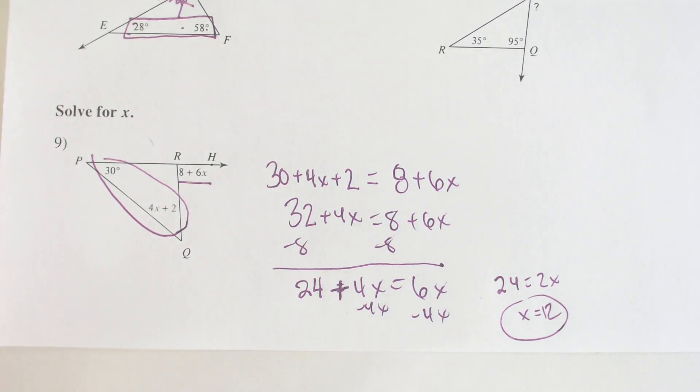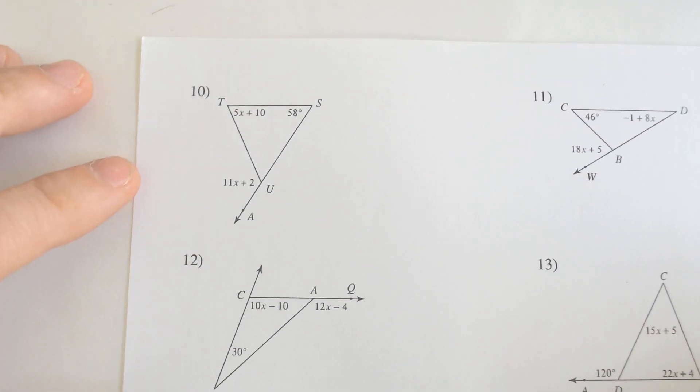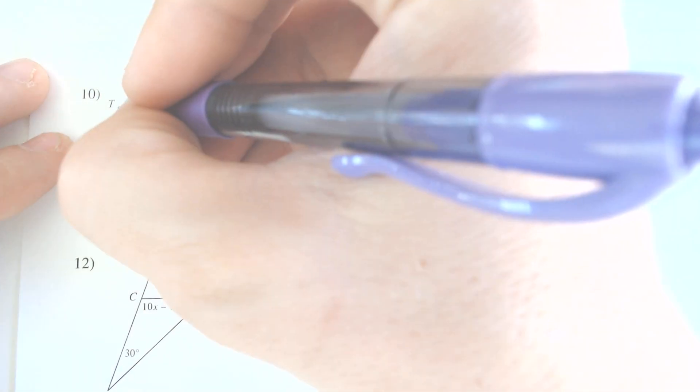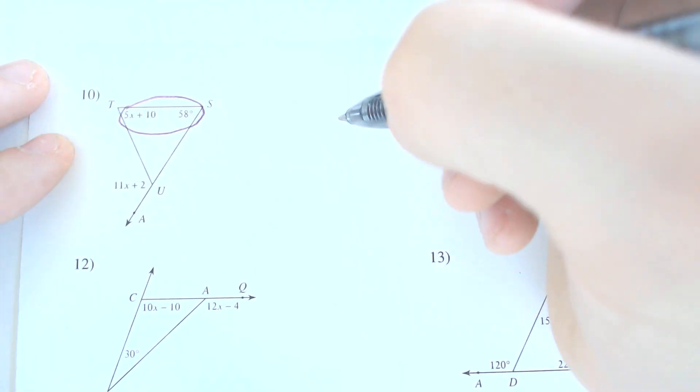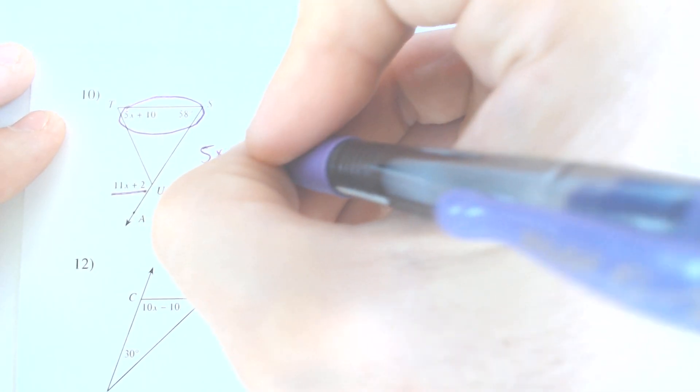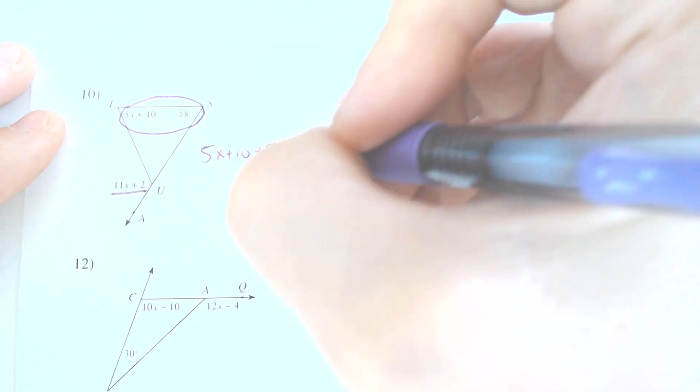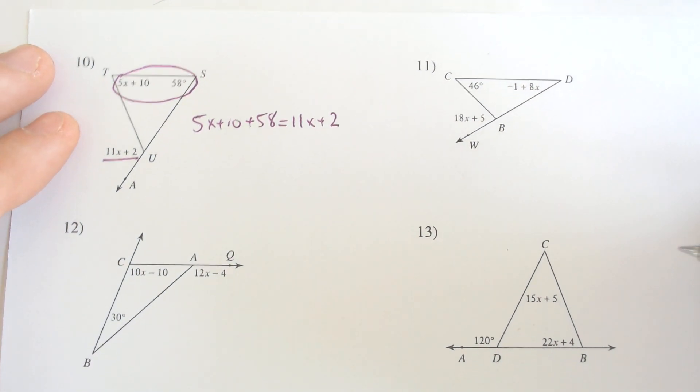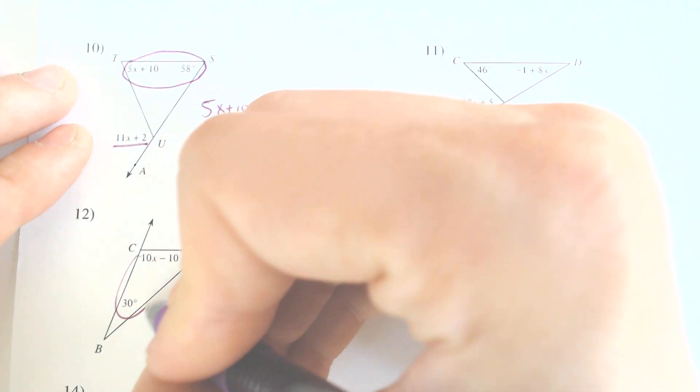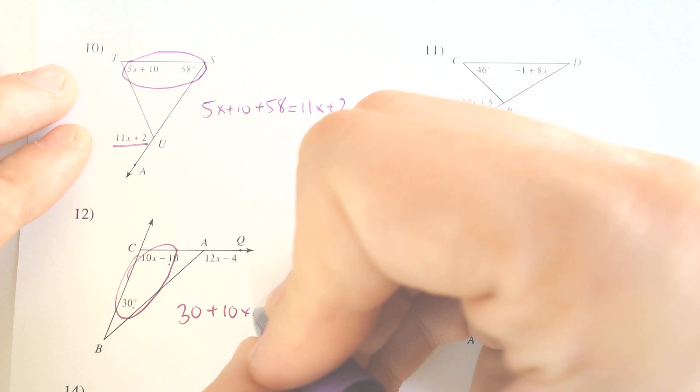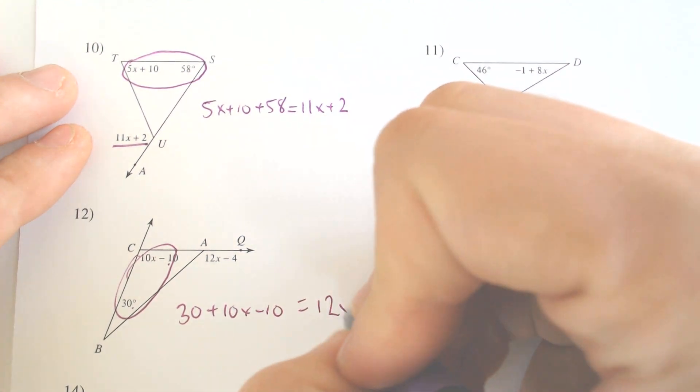Let's keep the trend going. Let's do a few more equations. That one was kind of quick, but most of the geometry part is in the very beginning, the setup. Afterwards it's just solving another algebra one problem type thing. Here are the two interior angles, they must add to equal that singular exterior. So that means that 5x plus 10 and 58 must add to 11x plus 2. Let's try it without solving it. Let's just keep going through with the setup. These two interior, 30 and the 10x minus 10, must add to the 12x minus 4.